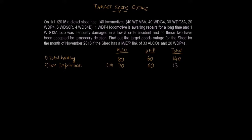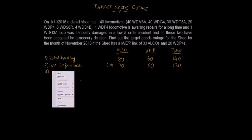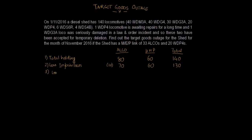In the next step we subtract the number of temporarily deleted locomotives from this figure. We have one temporarily deleted ALCO locomotive, so this makes the number of ALCOs 69, and one temporarily deleted HHP locomotive makes the number of HHP locomotives 59. So the total number of locomotives now becomes 128. This is an important figure and it is known as effective holding.